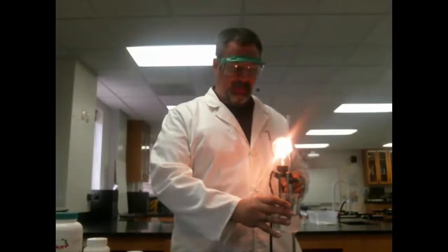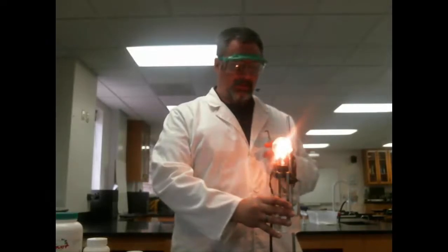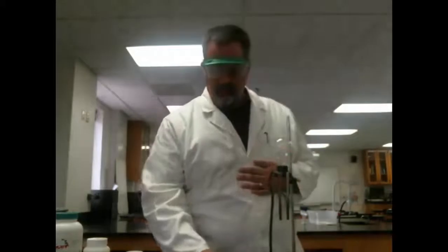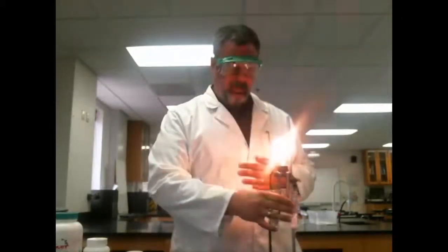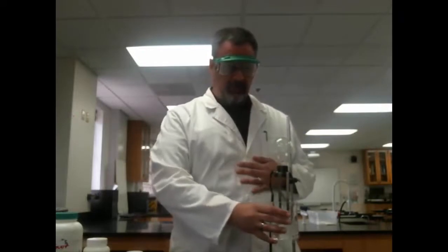And you can see the light isn't quite as bright as it was with the sodium chloride. With the sodium chloride, very bright light. With the magnesium sulfate, much less bright. That's because magnesium sulfate is a weak electrolyte. Not a lot of ions in there. A lot of the ions are still stuck together because they're very positively charged.